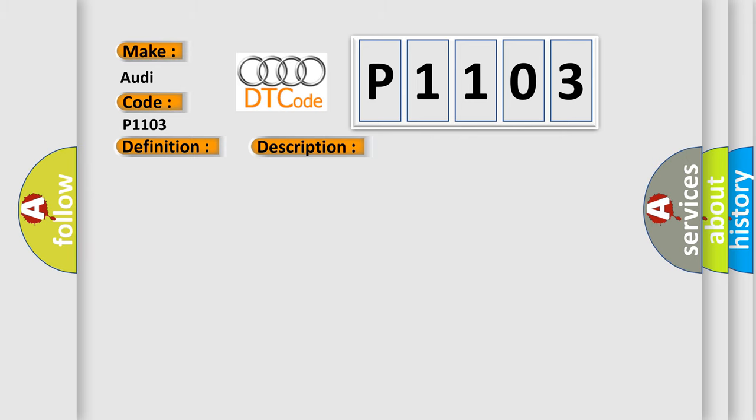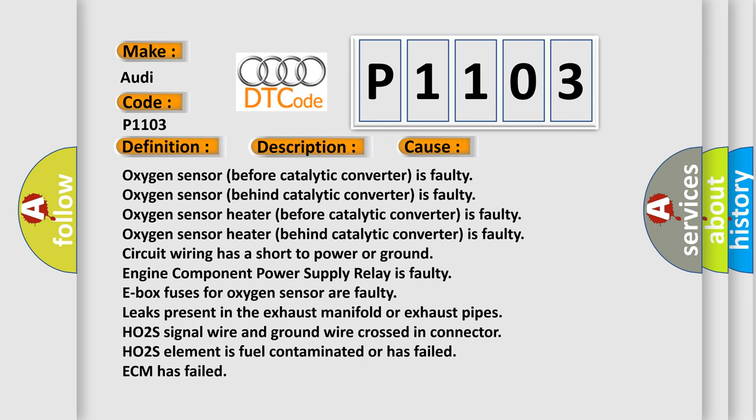This diagnostic error occurs most often in these cases: oxygen sensor before catalytic converter is faulty; oxygen sensor behind catalytic converter is faulty; faulty oxygen sensor heater before catalytic converter; oxygen sensor heater behind catalytic converter is faulty; circuit wiring has a short to power or ground; engine component power supply relay is faulty; E-box fuses for oxygen sensor are faulty; leaks present in the exhaust manifold or exhaust pipes; HO2S signal wire and ground wire crossed in connector; or HO2S element is fuel contaminated or has failed.